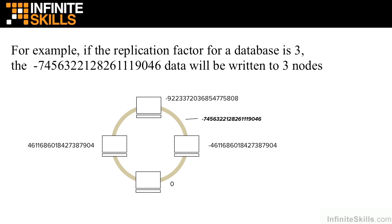Just to illustrate this, if the replication factor for a database is three, then the negative 7, 4, 5, 6 data that we were looking at earlier will be written to three nodes. If one of those nodes were to go down, that's okay — we still have two replicas of the data. And even if two nodes were to go down, we're still good. We still have an instance of the data. This is replication, a topic we will be working with hands-on as we go forward with the course.